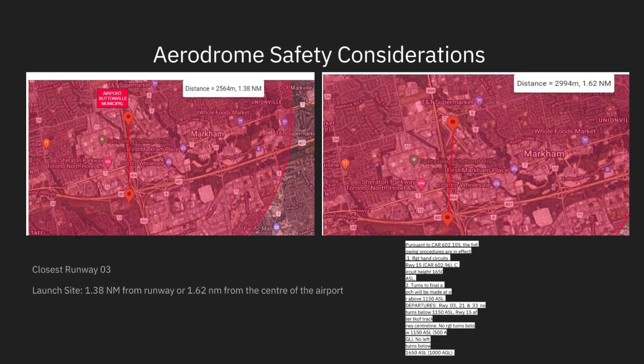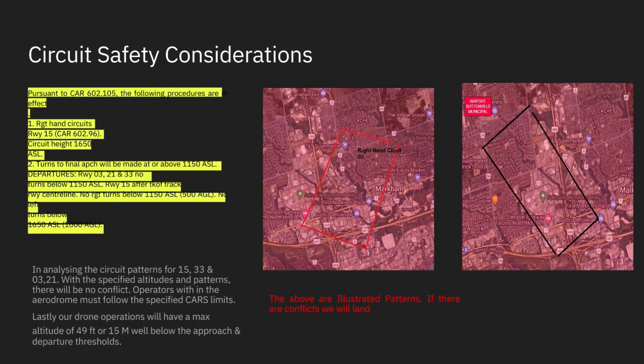It is an additional suggestion to use the National Research Council drone site selection tool to measure distances from launch areas from the center of the airport, as well as from the edge of a runway from your particular launch site. Having these measurements will aid in safety during launch, takeoff, the cruise phase, and landing. Additionally, factoring in the established traffic patterns as per CARS 901.47 can be referenced in the procedure section of the Canadian Flight Supplement.